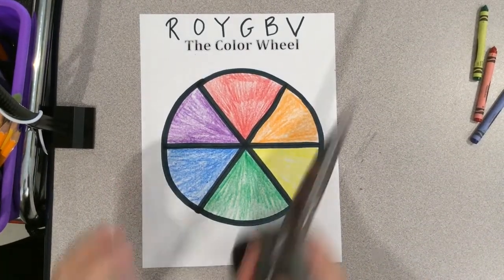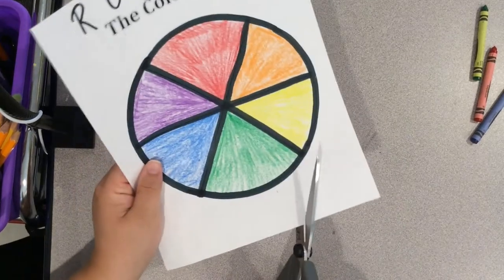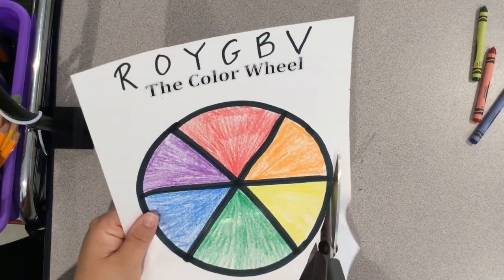All right, now that we have our color wheel finished, we're going to cut it out so that we can get ready to create the background.